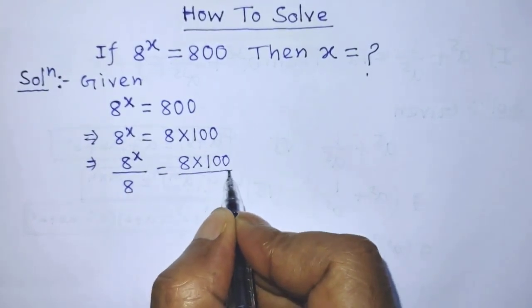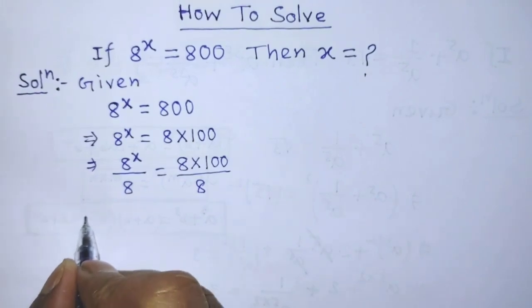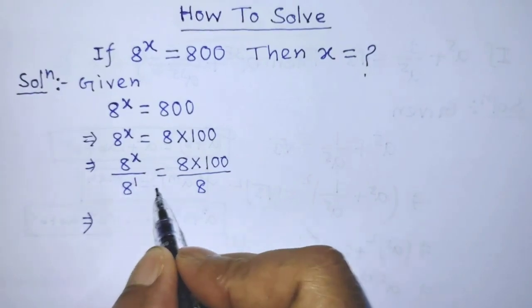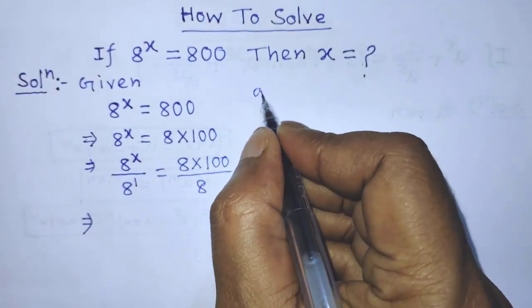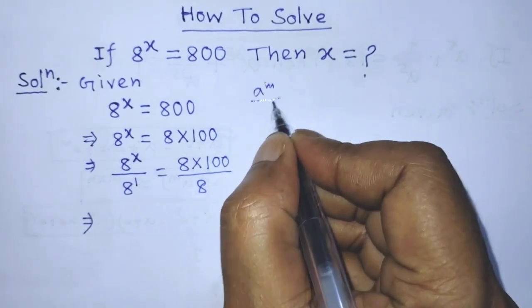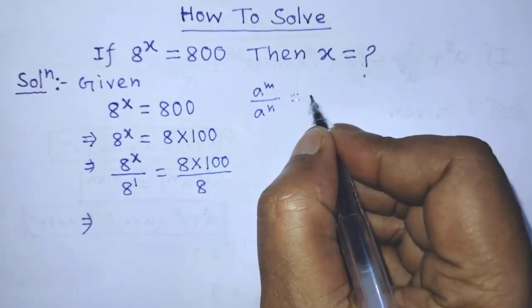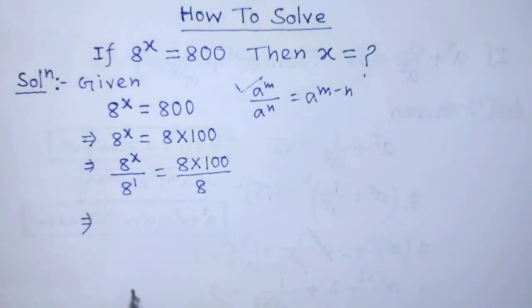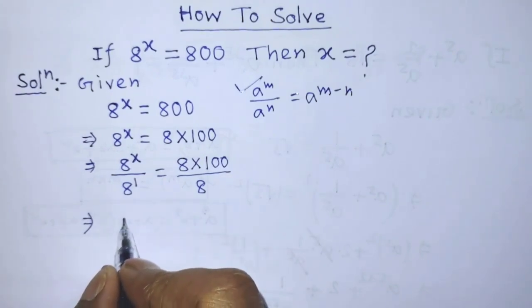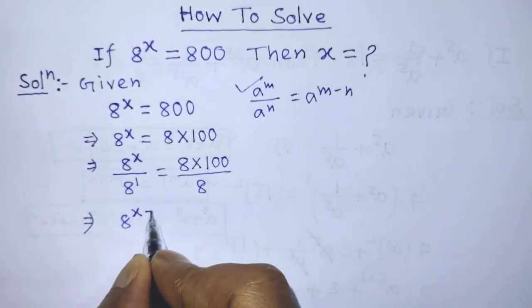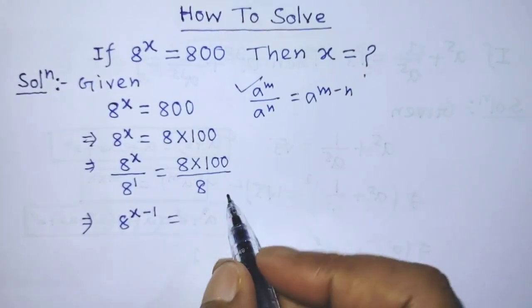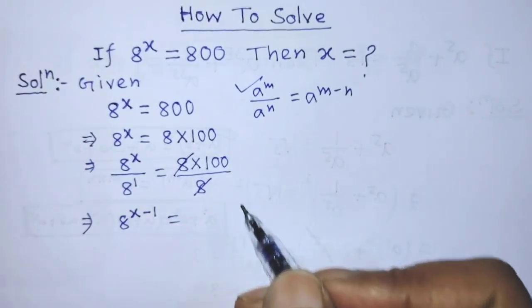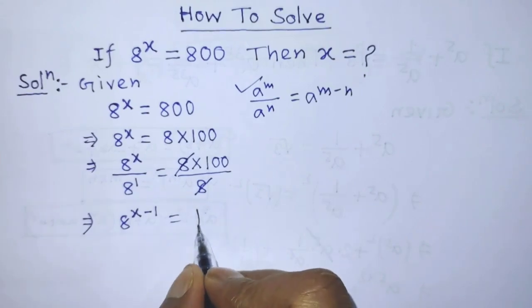...100 over 8. To simplify the left hand side of this equation, we have to apply the formula: a to the power m over a to the power n is equal to a to the power m minus n. According to this formula, we can write from the left hand side 8 to the power x minus 1 is equal to 100, after cancelling 8 from numerator and denominator.